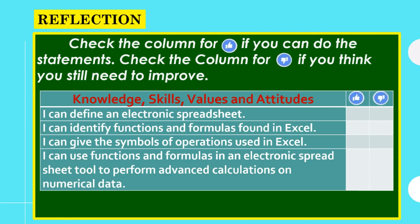After doing activities, it is time to reflect on your own learning. Check the column for thumbs up if you can do these statements. Check the column for thumbs down if you think you still need to improve. For example, I can define an electronic spreadsheet. If you think you can already do this, check the column for thumbs up. If you think you still need to improve, check the column for thumbs down.